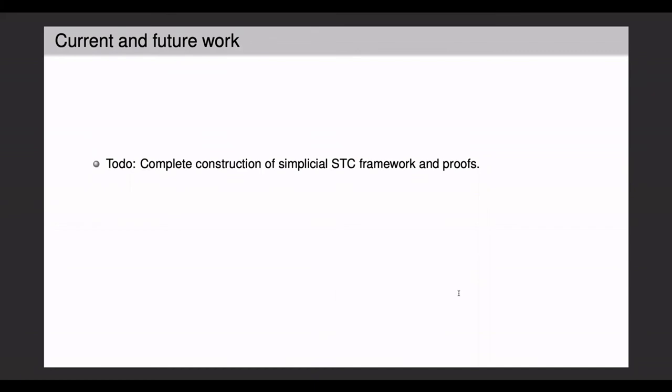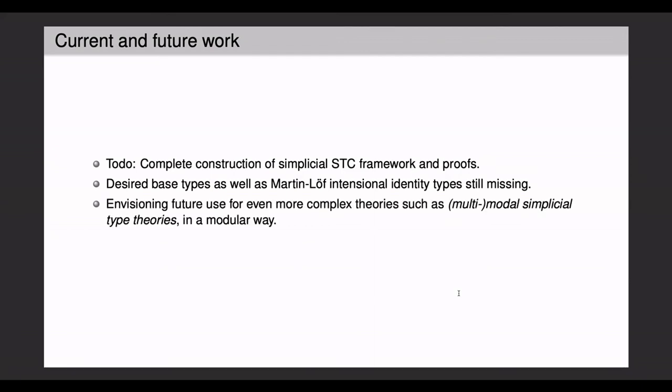So, what remains to be done is to completely finalize the construction of simplicial STC and the proofs, and also add to our consideration some base types that are desired, as well as the Martin-Löf identity types, which are still missing currently, the intensional identity types. One of the hopes for the future is to be able to prove meta theorems also for even more complex theories, such as further extensions of simplicial type theory, by certain modalities or multi-modalities, and to be able to do this as modularly as possible.